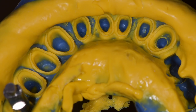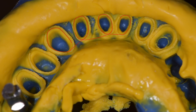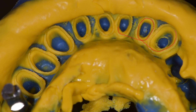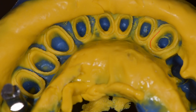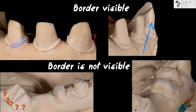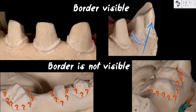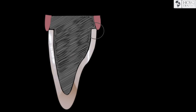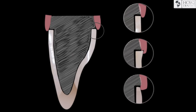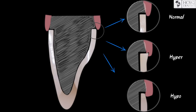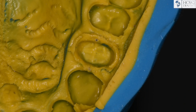Compliance with the retraction protocol ensures that the impression is obtained with clear edges of the preparation. A model made from such an impression will help to see the vector of the restoration exit from the root of the tooth, and make it without hyper or hypo contouring — avoiding giving a poor quality impression to the dental laboratory.